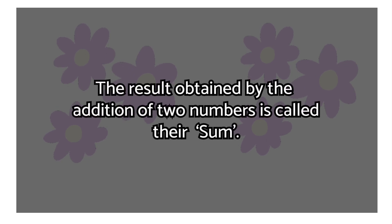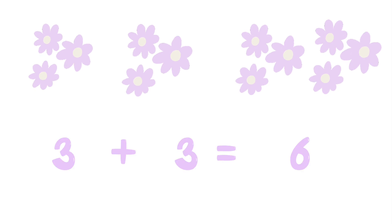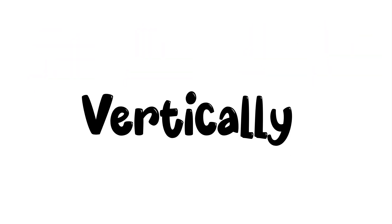Here are some flowers. How many are these flowers? One, two, three — yes, three flowers. If I give you some more flowers, can you count how many more? One, two, three — yes, three more flowers. We will add these flowers to find their sum. The result obtained by addition of two numbers is called the sum. Count these flowers: one, two, three, four, five, six — yes, three plus three equals six.